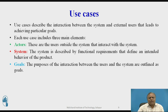Now we are going to see what is the meaning of use cases. A use case describes the interaction between the system and an external user that leads to achieving a particular goal. Each use case includes three main elements: Actor, System, and Goal. Actors are users outside the system that interact with it. The system describes functional requirements that define the intended behavior of the product. Goals are the purposes of interaction between the user and the system.